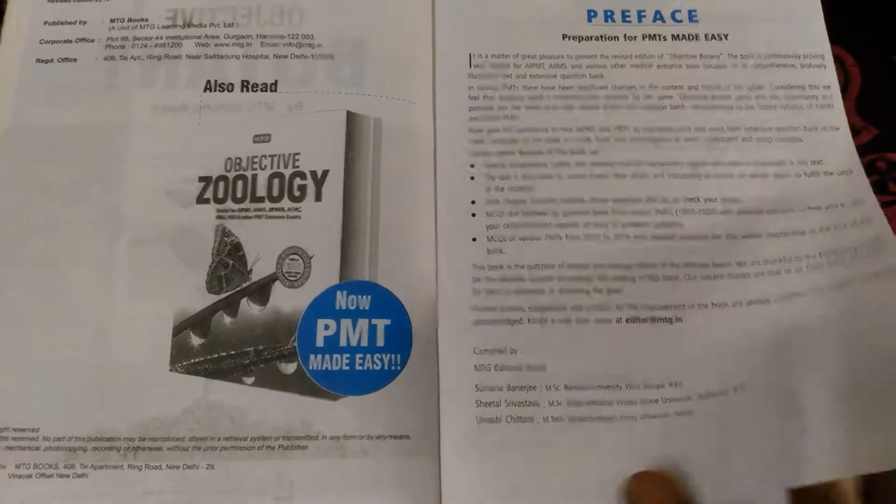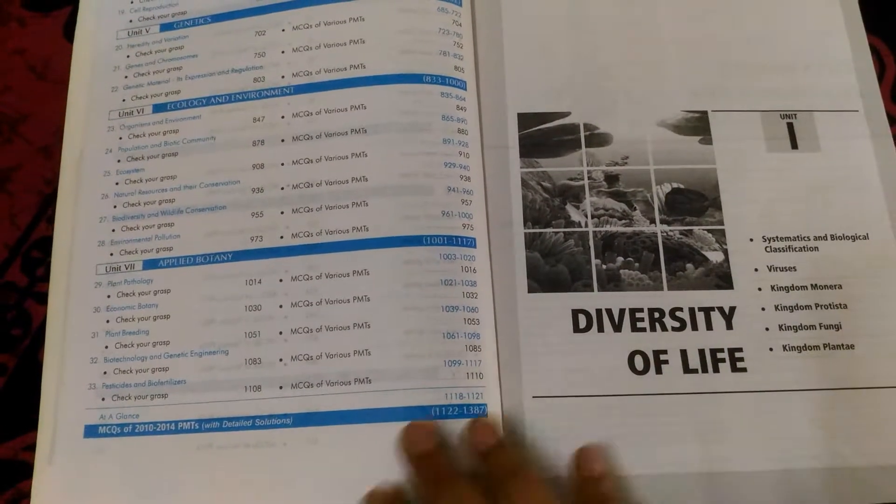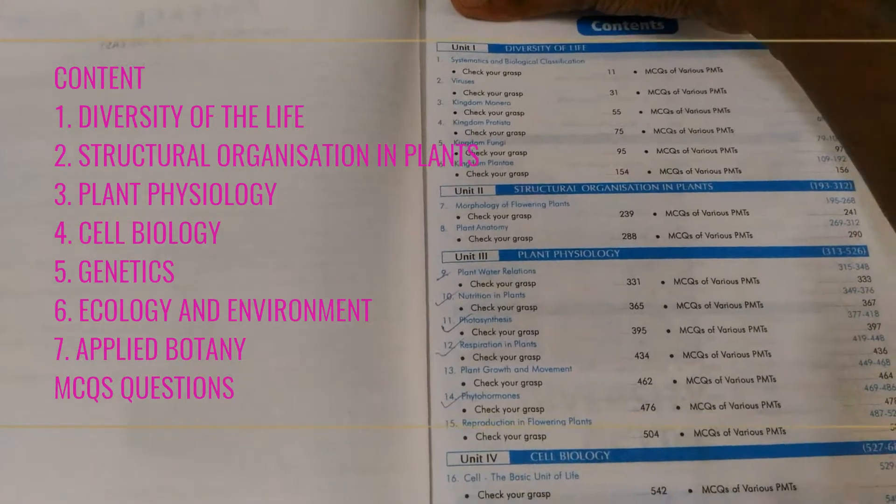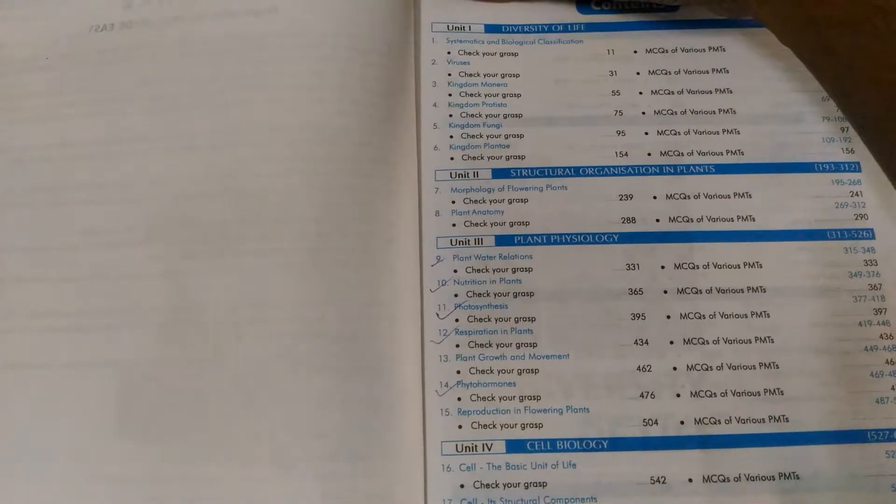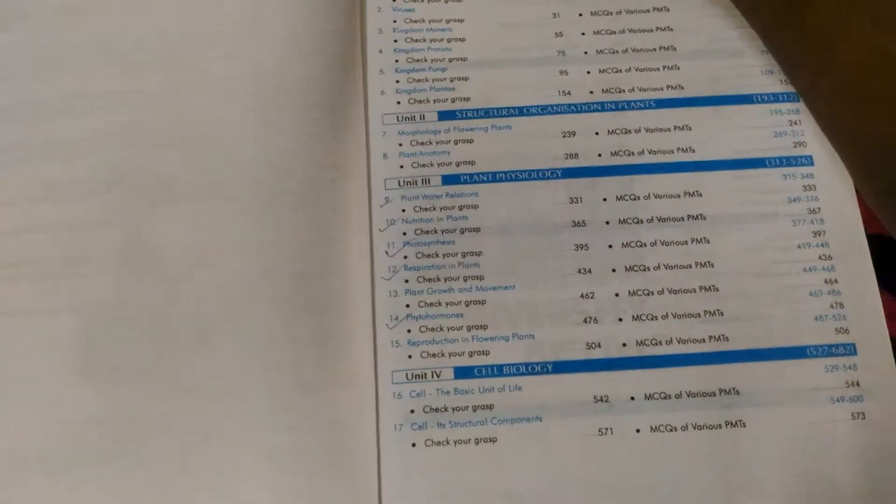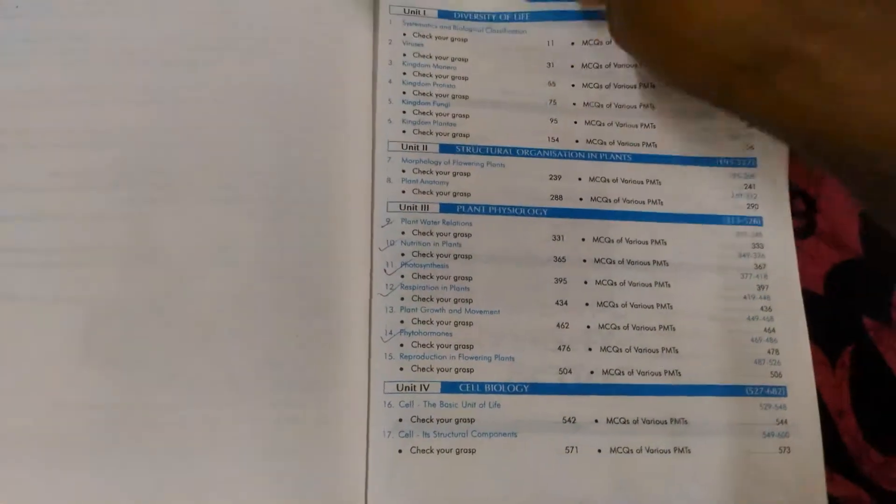You see that various chapters are given in this book. There are six or seven units in botany. Here you see the contents: diversity of life, structure and organization of the plant, physiology, cell biology, genetics, ecology and environment, and applied botany.